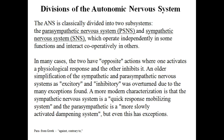The ANS is classically divided into two subsystems, the parasympathetic and sympathetic nervous systems, which operate independently in some functions and interact cooperatively in others. In many cases, the two have opposite actions where one activates a physiological response and the other inhibits. An older simplification of the sympathetic and parasympathetic nervous systems as excitatory and inhibitory was overturned due to the many exceptions found.